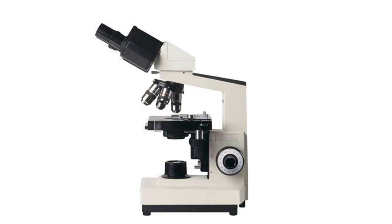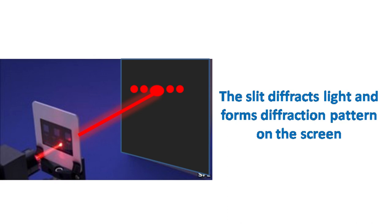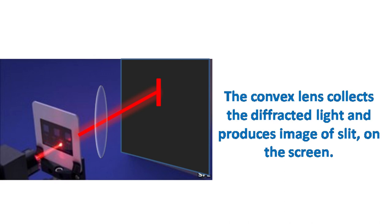Now the question is, how does diffraction affect the ability to see small objects? Let's consider an example where a slit diffracts light and produces a diffraction pattern on the screen. If we place a convex lens in front of the slit, then the image of the slit can be seen on the screen instead of the diffraction pattern.